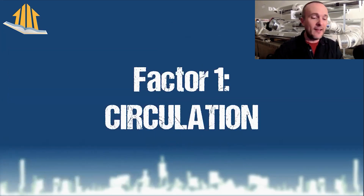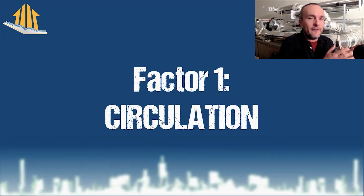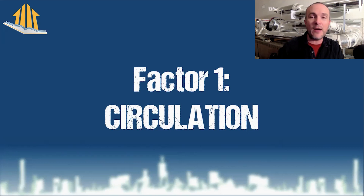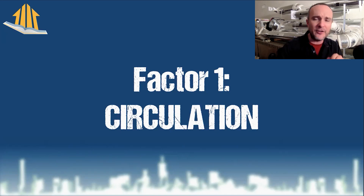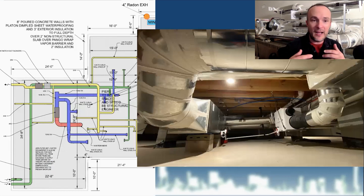Circulation is the first factor. We've already thought about the four elements of home performance: heat, airflow and pressure, moisture, and air quality. All five factors apply to those four elements. Ventilation is the V in HVAC — we also have heating and air conditioning, which is why we do things like a Manual J calculation. Circulation means: how are we going to get healthy air around into all of the different spaces in the house?